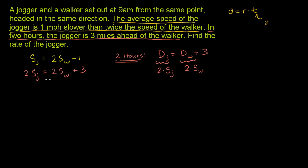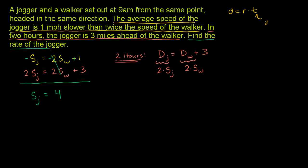Now we have two equations and two unknowns, and it's tempting to eliminate one variable. We have 2 times the speed of the walker in both equations. Let's multiply the top equation by negative 1: this becomes negative speed of the jogger, negative 2 times the speed of the walker, and negative 1 times negative 1 is plus 1. Adding the two equations, the walker speed terms cancel out. We get 2 times the speed of the jogger minus the speed of the jogger — that's just the speed of the jogger — equals 1 plus 3. So the speed of the jogger is 4. That's all they wanted us to find.